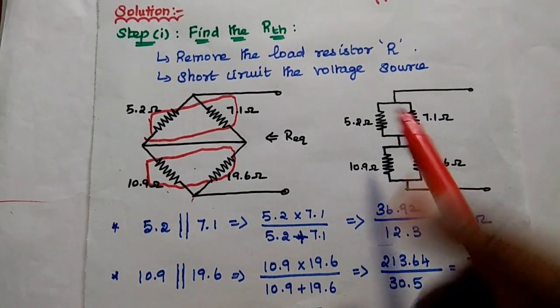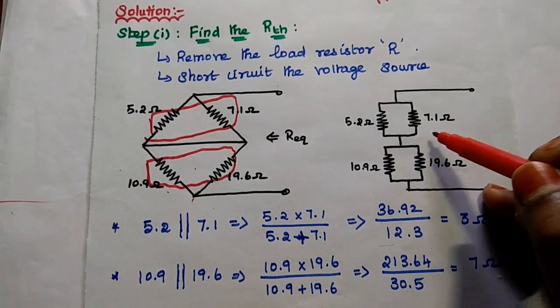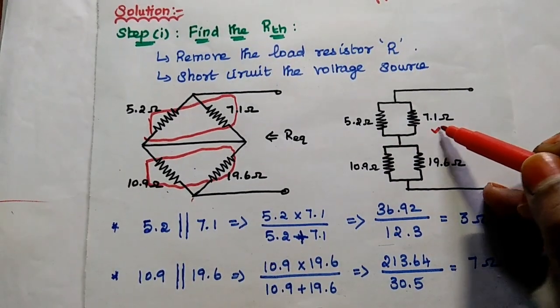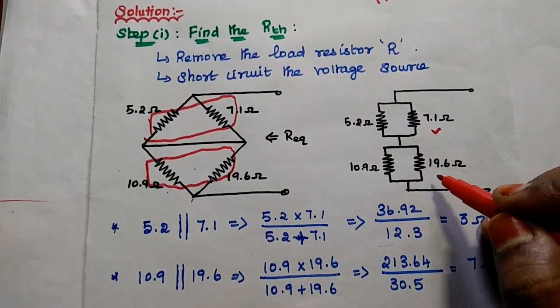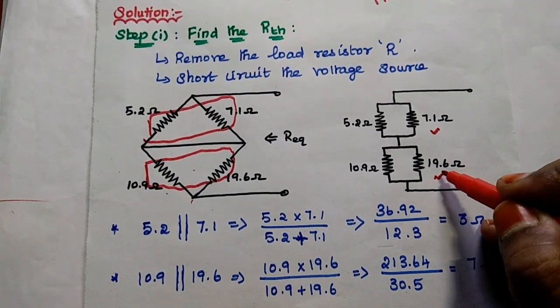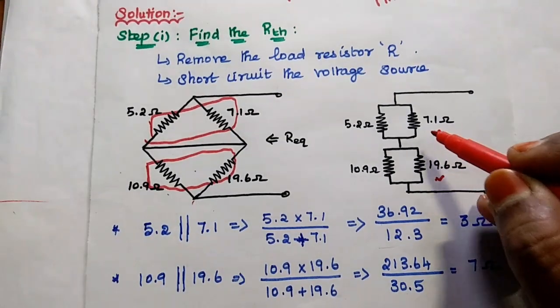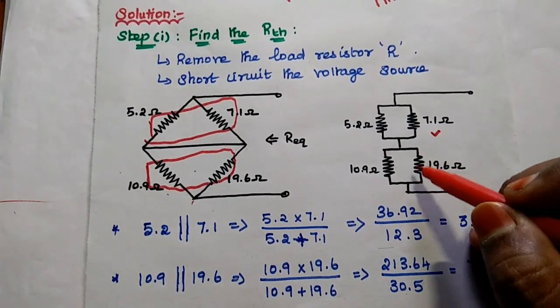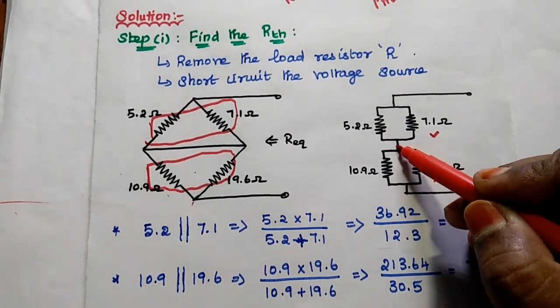Here these two resistors are in parallel and these two resistors are in parallel, because both ends are connected together, and these two parallel combinations are connected in series. So 5.2 ohm is in parallel with 7.1 ohm, and 10.9 ohm is in parallel with 19.6 ohm. We solve each parallel combination and then add them in series.